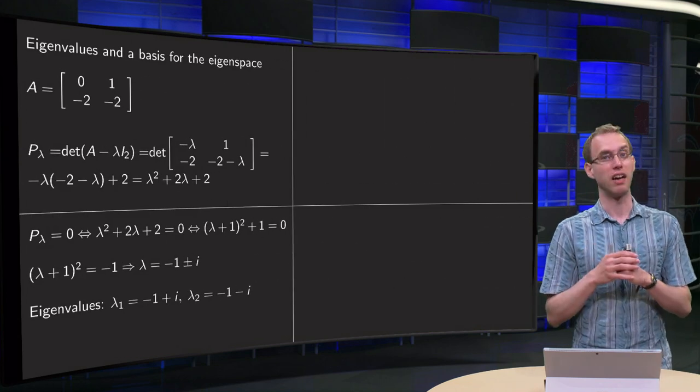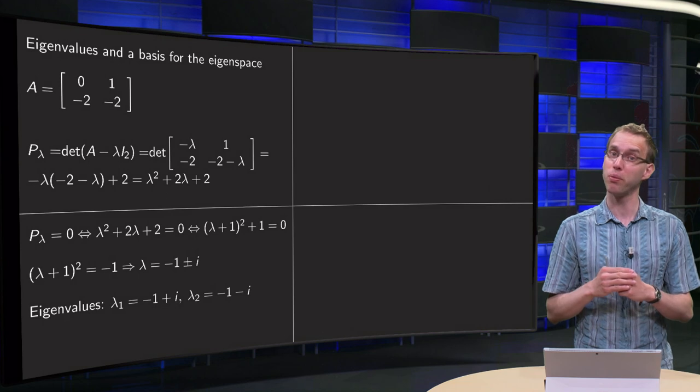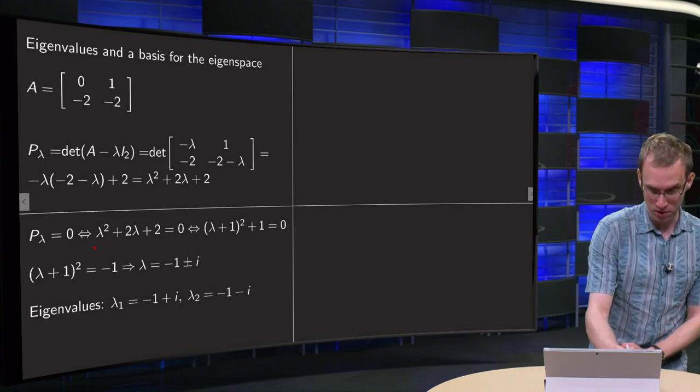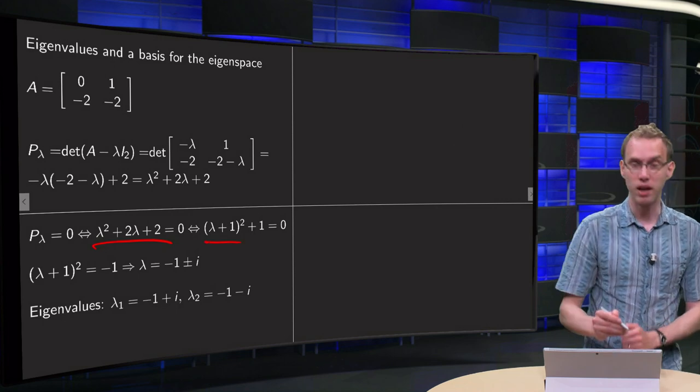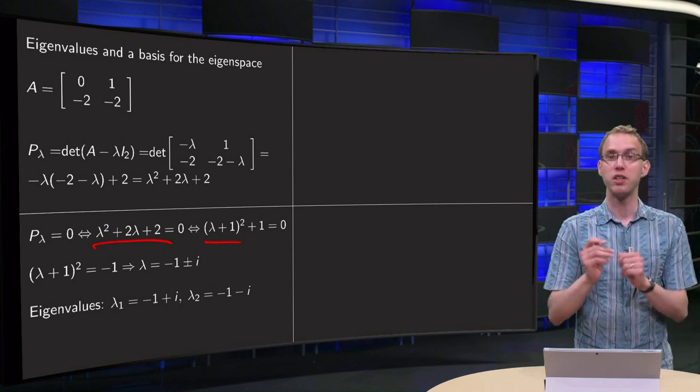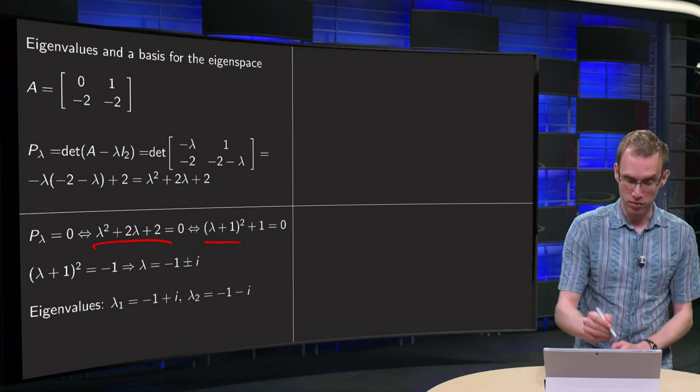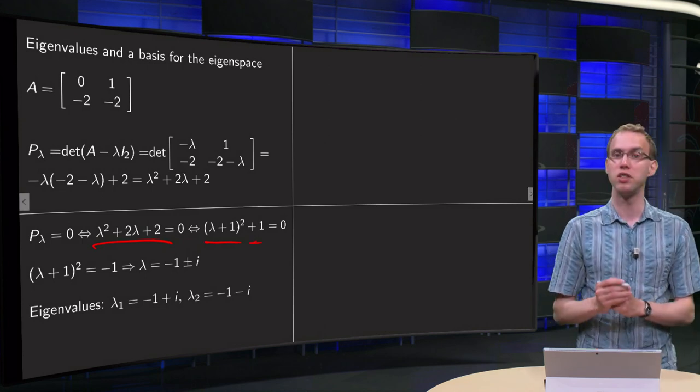In order to find the eigenvalues we have to find the zeros of the characteristic polynomial, so we set lambda squared plus 2 lambda plus 2 to 0. Complete the square: lambda squared plus 2 lambda equals lambda plus 1 squared minus 1, so plus the 2 is an additional plus 1.